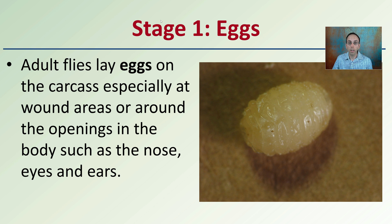Stage one: the eggs. All adult flies lay eggs on the carcasses, especially in wound areas or around openings in the body such as the nose, eyes, and ears. This is the very first stage to look for early on in the fly life cycle.